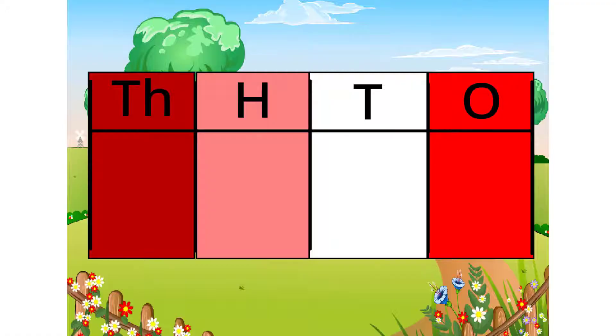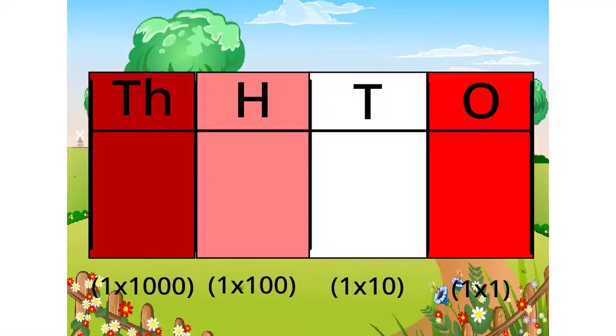Do you notice anything with this table? Correct. The number multiplies by 10 each time it goes left one column. Because it multiplies by 10 each time, we call this system base 10.